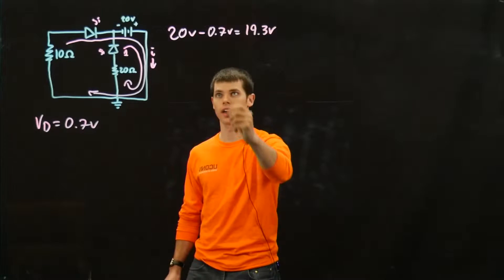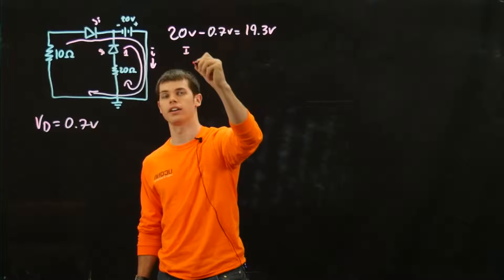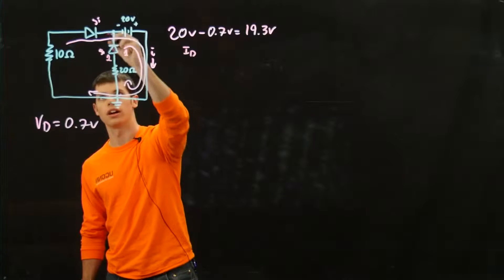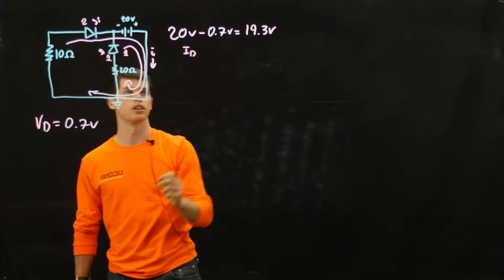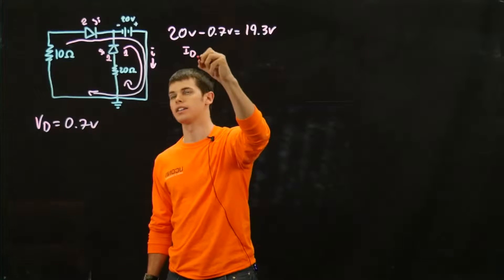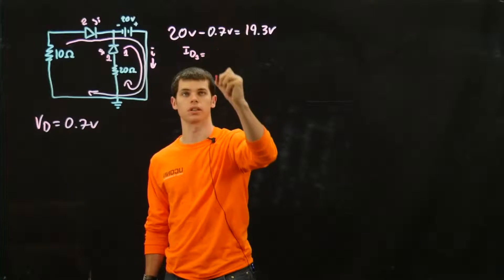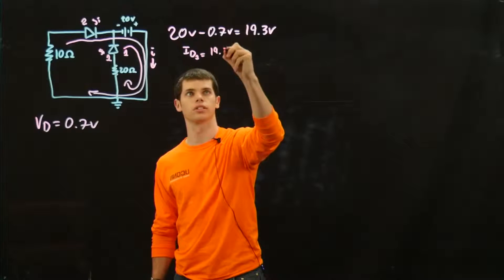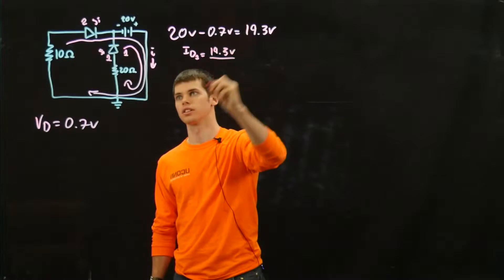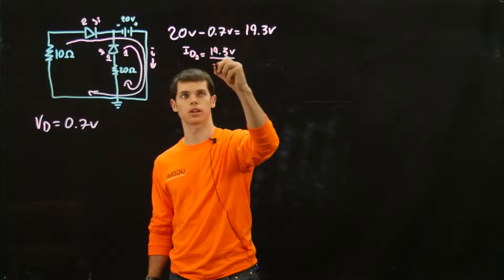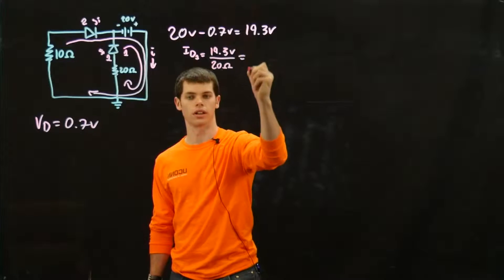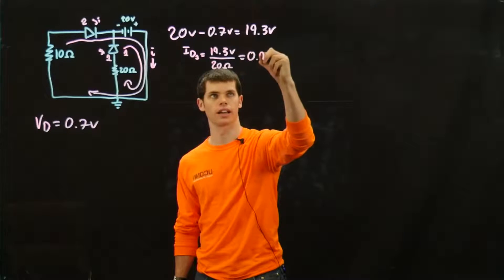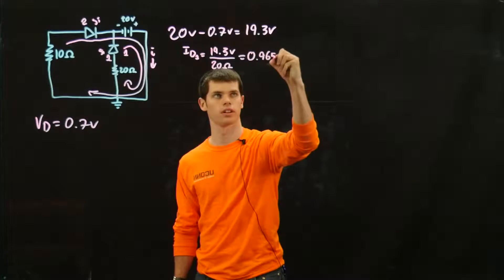Okay, now that we have that, to find the current through diode - let's say this is diode one and diode two - Id1 is simply equal to, through Ohm's law, 19.3 volts divided by our resistance here, which is 20 ohms. That's going to give us an amperage of 0.965 amps.